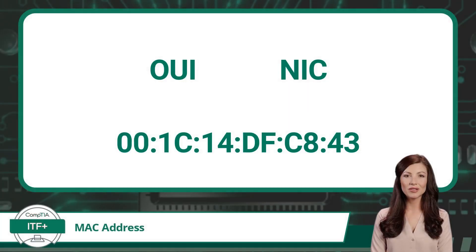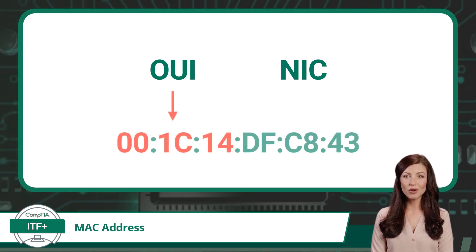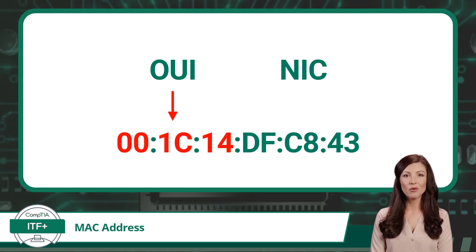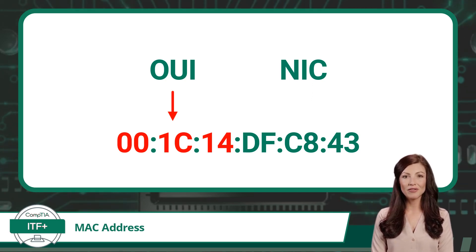Let's take a closer look at the structure of a MAC address. A MAC address consists of 12 hexadecimal digits, which is equivalent to 48 binary bits. The first part of a MAC address is the OUI, which stands for Organizationally Unique Identifier. This section comprises the first six hexadecimal digits of the MAC address, and the OUI helps identify the manufacturer or vendor of the network interface card.